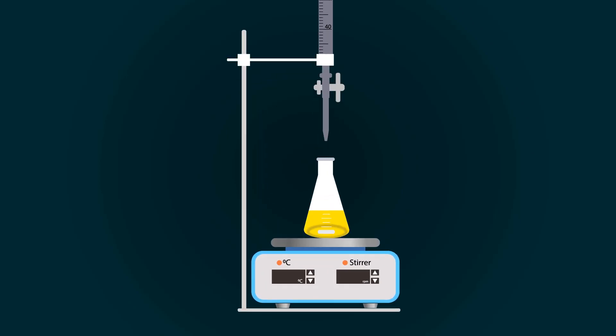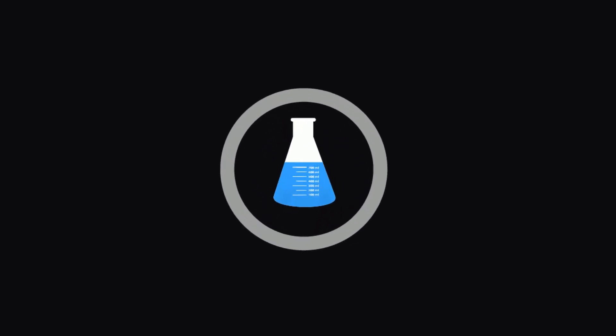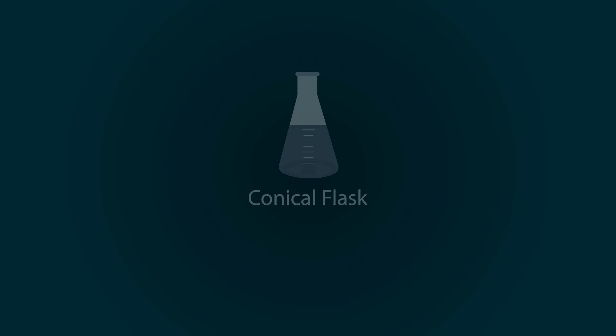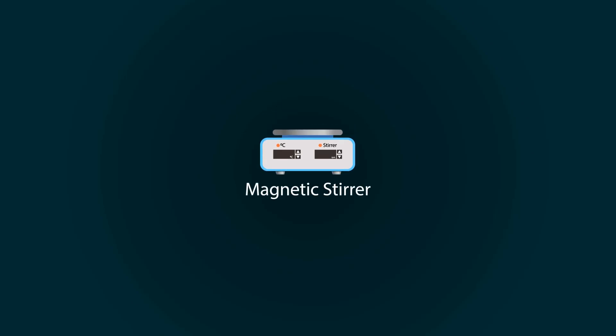In this video, you will learn how to titrate sodium carbonate against hydrochloric acid. You will need an iron stand, 50-milliliter burette, funnel, 0.1 molar solution of HCl, magnetic stirrer, magnetic bar, and a dropper.